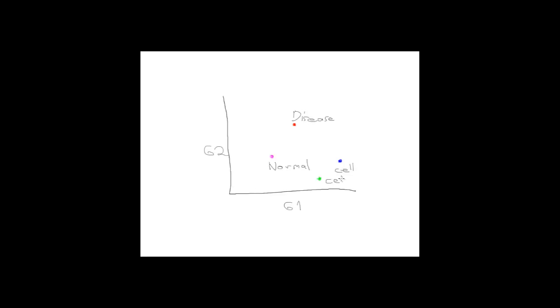Now we treat that cell line with a drug and measure expression after a few hours. The expression is now changed by reducing the level of the two genes in the same direction when comparing the disease versus the normal tissue. Because we are doing it in very high dimension, we can prioritize drugs that can potentially reverse the expression in disease.